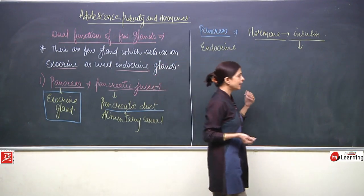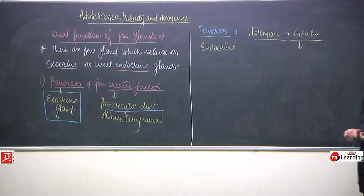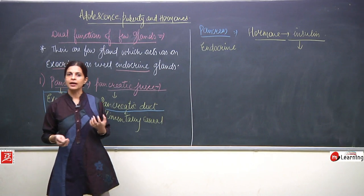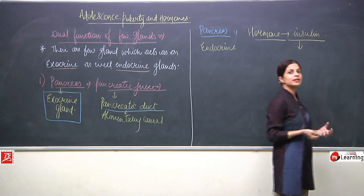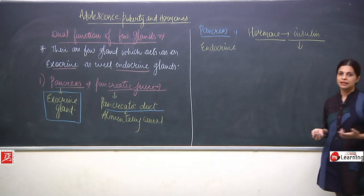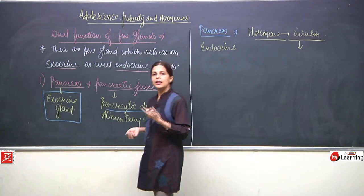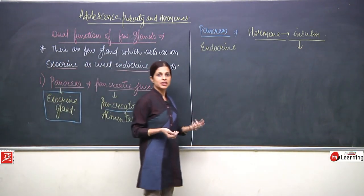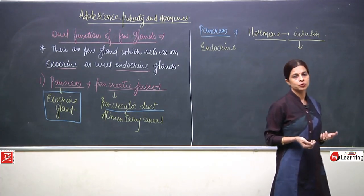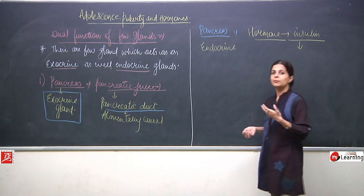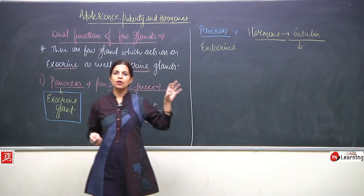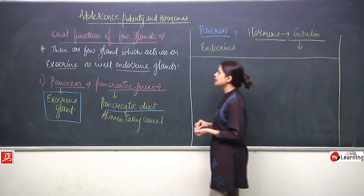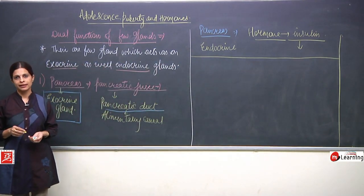When pancreas secretes insulin, it acts as an endocrine gland. When it secretes pancreatic juice through the pancreatic duct into the alimentary canal, it acts as an exocrine gland. So pancreas is one example of a gland that has a dual function — acting both as an endocrine and exocrine gland.